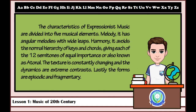The characteristics of Expressionist music are divided into five musical elements. Melody has angular melodies with wide leaps. Harmony avoids the normal hierarchy of keys and chords, giving each of the twelve semitones equal importance — also known as atonal. The texture is constantly changing, and the dynamics feature extreme contrast. Lastly, the forms are episodic and fragmentary.